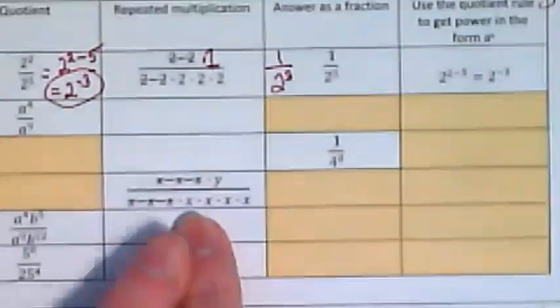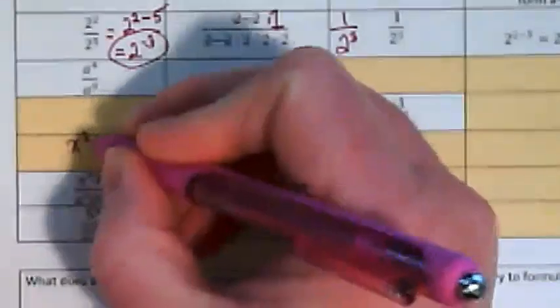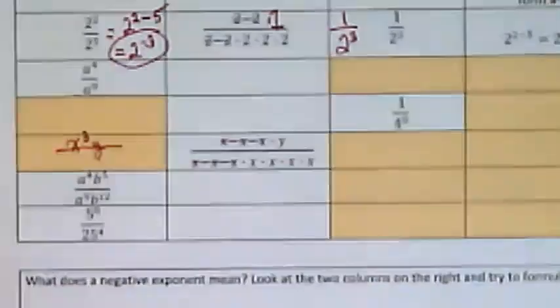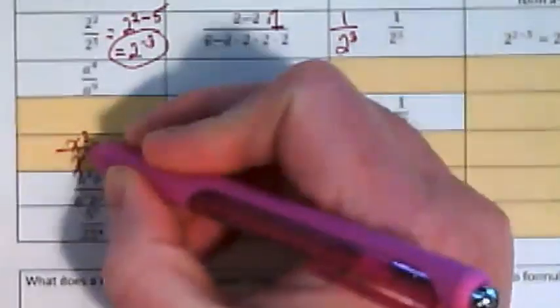So let's go down to this one here. There's three x's and a y. That means the original would have been x to the third y over 1, 2, 3, 4, 5, 6, 7 x's. So x to the seventh.